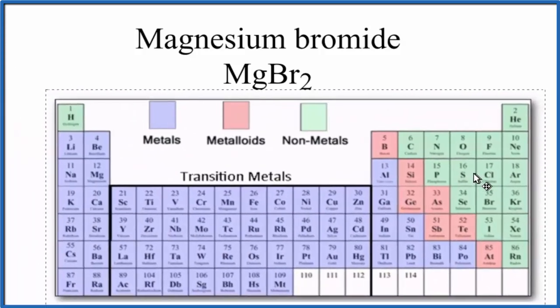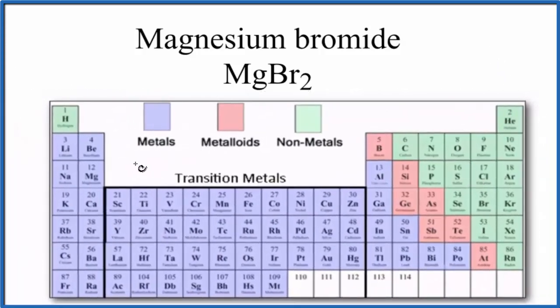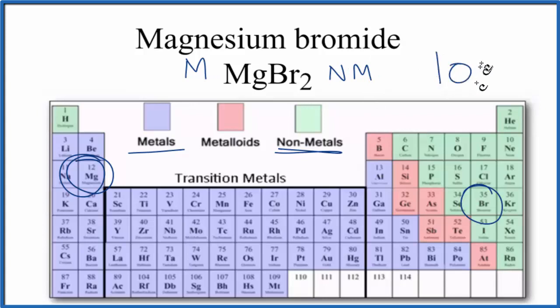So if we look at the periodic table divided into metals and nonmetals, we're looking for magnesium which is right here - that's a metal. Bromine over here - that's a nonmetal. When we have a metal and a nonmetal, that usually forms an ionic bond. So magnesium bromide MgBr2 would have an ionic bond between the magnesium and the bromine atoms.